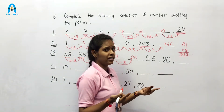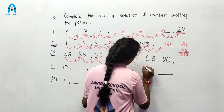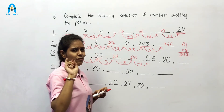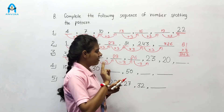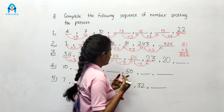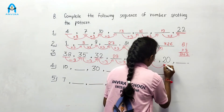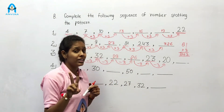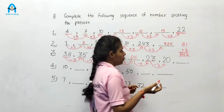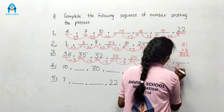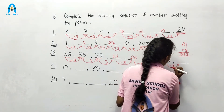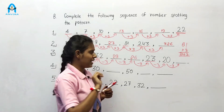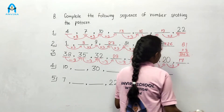Let's check that our pattern is correct. 26 minus 3: counting 26, 25, 24, and 23 — yes, correct. Then 23 minus 3: 23, 22, 21, and 20. Then for the next number, subtract 3 from 20: 20, 19, 18, and 17. So our next number is 17. This pattern is complete.